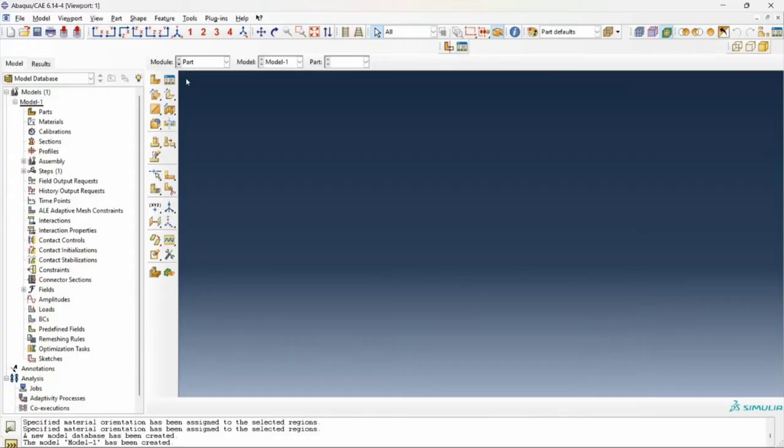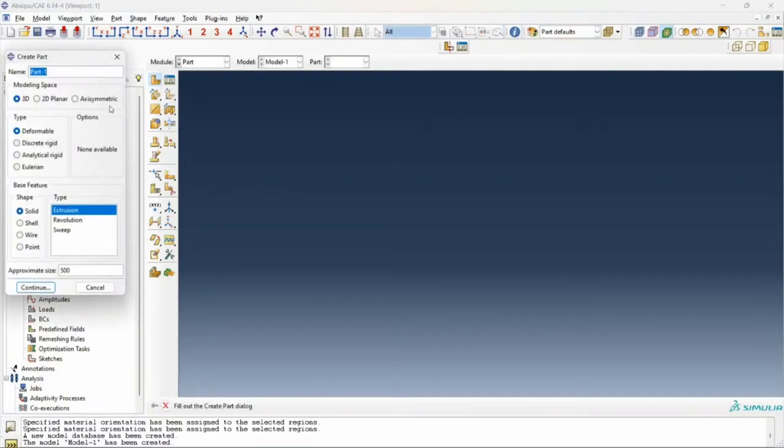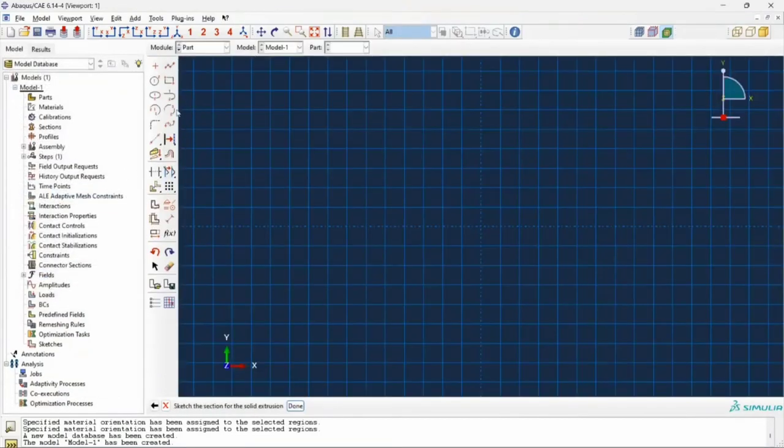Welcome to Abacus. So we'll start by creating our part as usual. Instead of creating a single cantilever with a crack, we'll create two identical half cantilevers and bond them for the first 100 mm. So we'll click on create part. Our part will be a 3D part of deformable type, a solid of extrusion type. We click on rectangle. Our first point will be the origin. Our second point will be the entire length of the cantilever along the x-axis and half the width of the cantilever along the y-axis.